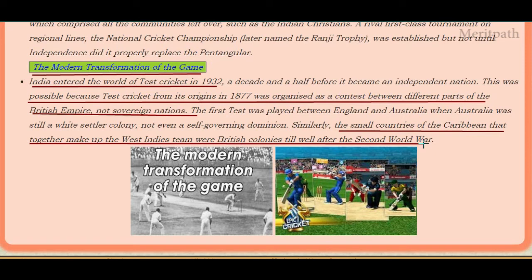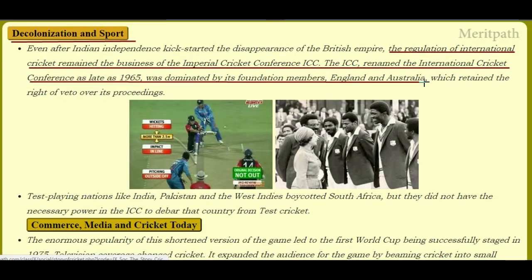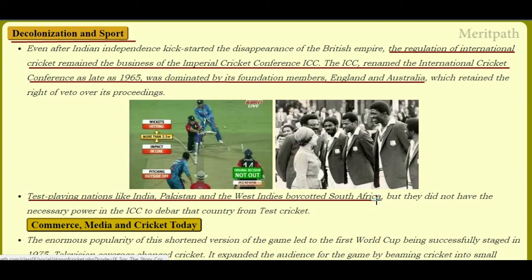The small countries of the Caribbean that together make up the West Indies team were British colonies well after the Second World War. Even after Indian independence kick-started the disappearance of the British Empire, the regulation of international cricket remained the business of the Imperial Cricket Conference, known as the ICC. This was renamed the International Cricket Conference in 1965 and was dominated by its founding member countries, England and Australia, who retained the right of veto. Test-playing nations such as India, Pakistan, and West Indies boycotted South Africa but did not have the necessary power in the ICC to debar that country from test cricket.